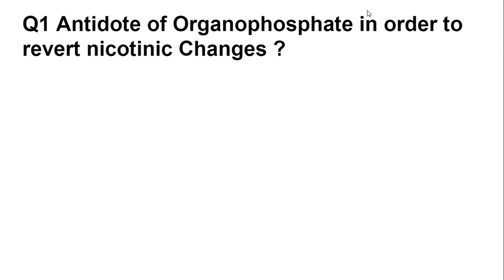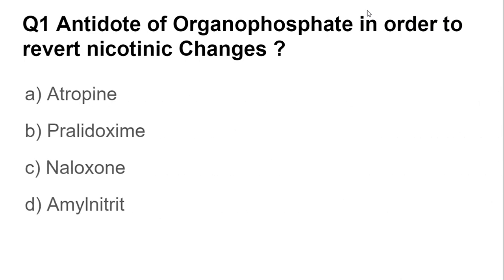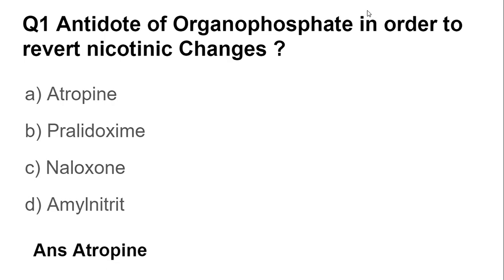The antidote of organophosphate in order to revert nicotinic changes. The options are atropine, pralidoxime, naloxone, and amyl nitrate. The answer is atropine — the antidote of organophosphate is atropine.